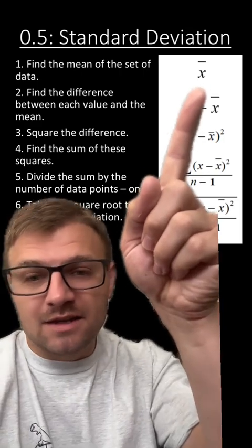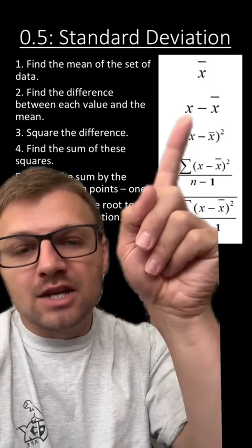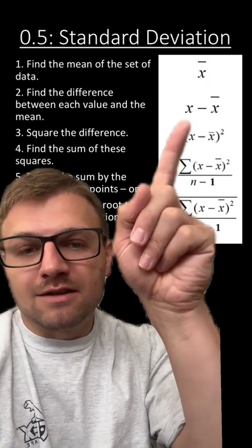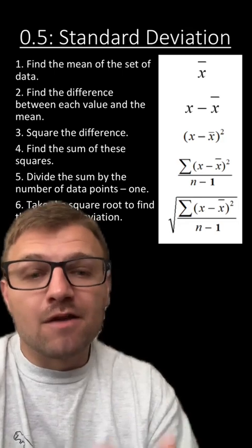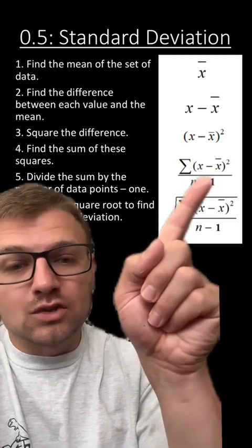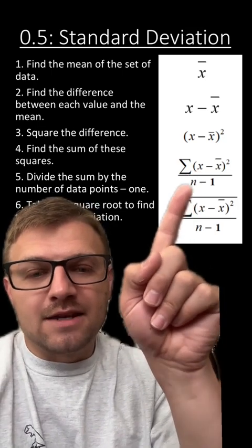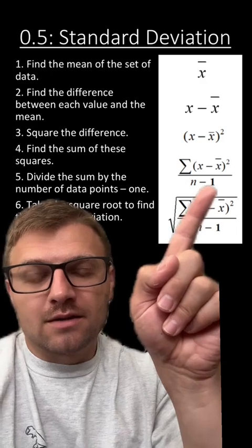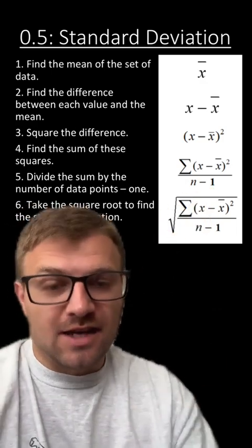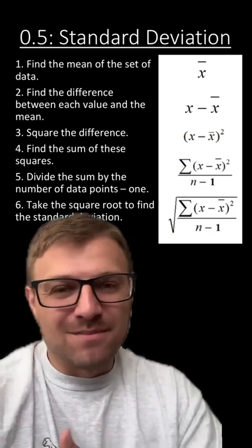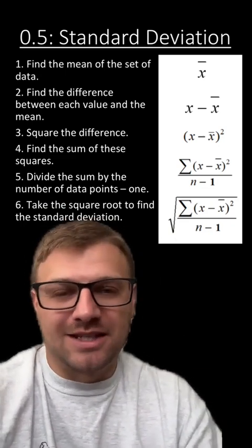Here is a list of the steps to work through a standard deviation problem. First, you find the mean of the data set, which is x-bar. You then find the difference of how each data point differs from the mean — so you take the data point and subtract the mean. You square that difference and find the sum of all of these differences for each one of the data points. You then take that sum and divide it by the number of data points minus one. Take the square root of that whole number, and that is your standard deviation. Let's go over a practice problem because it makes a lot more sense when you actually have data points.